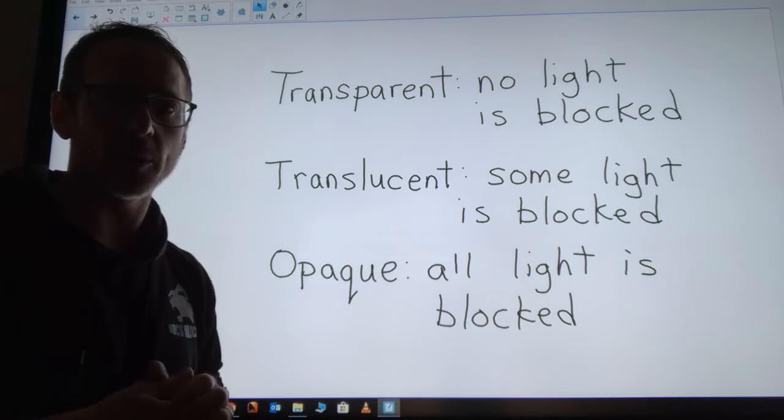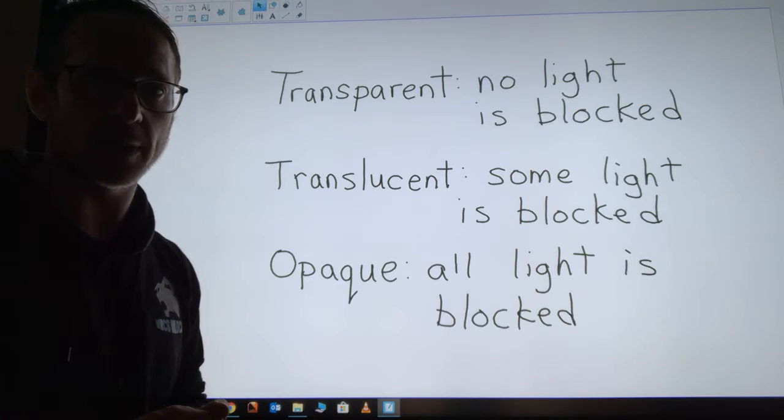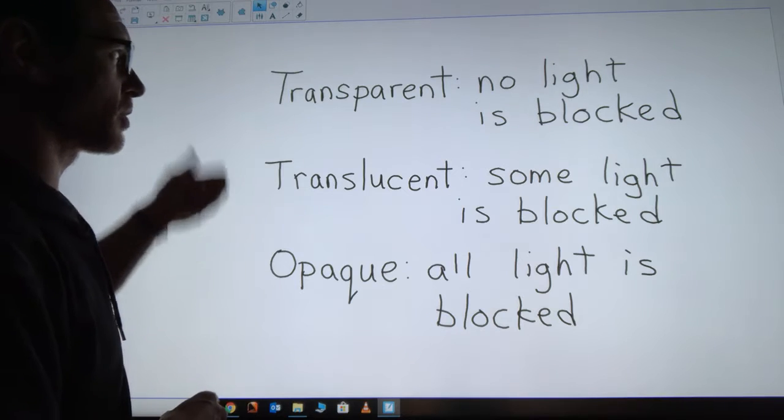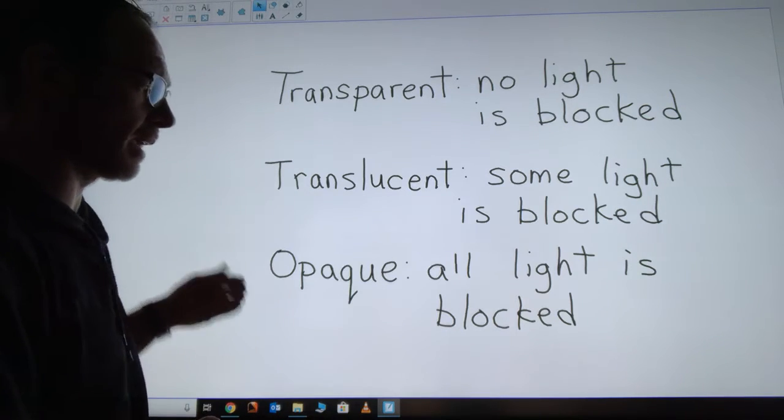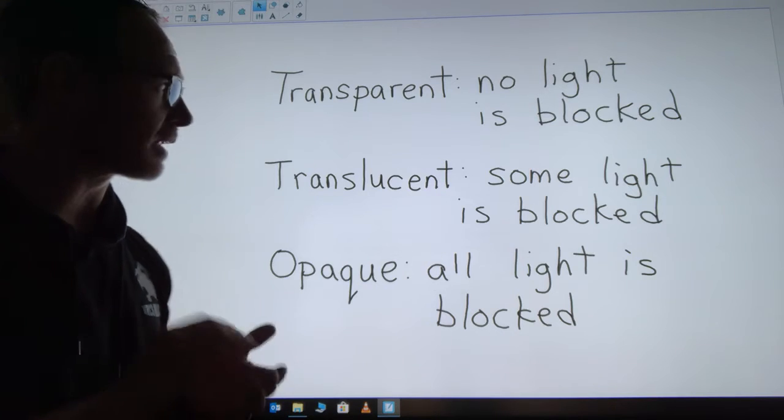Hi guys, for my last science video of the week I just want to review what we've talked about in the previous science videos for this week. So in our first video of the week we looked at these three important terms: transparent, translucent, and opaque. Each of them have to do with what light does when it contacts these materials.